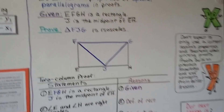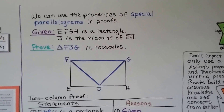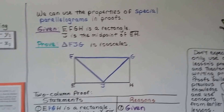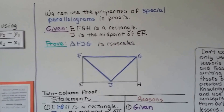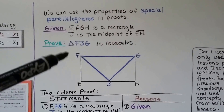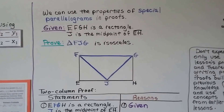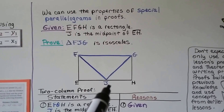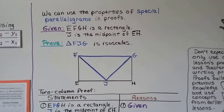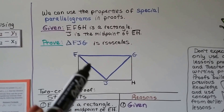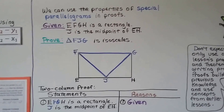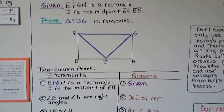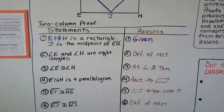So from these three steps — using the distance formula, the slope formula, and the midpoint formula — the diagonals are congruent perpendicular bisectors of each other. We can use the properties of special parallelograms in proofs. So we're going to do a two-column proof. Doesn't it kind of look like an envelope? It's given that EFGH is a rectangle, and J is the midpoint of segment EH. We need to prove that triangle FJG — the blue one — is isosceles.